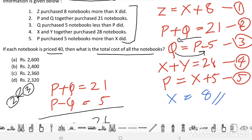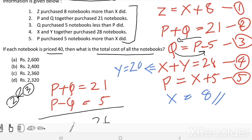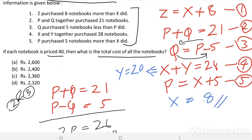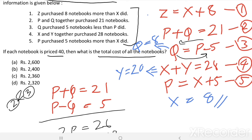When X = 8, from equation four, Y = 28 − 8 = 20. From equation three, Q = P − 5 = 13 − 5 = 8. From equation one, Z = X + 8 = 8 + 8 = 16. Now we have all the values: P = 13, Q = 8, X = 8, Y = 20, Z = 16.